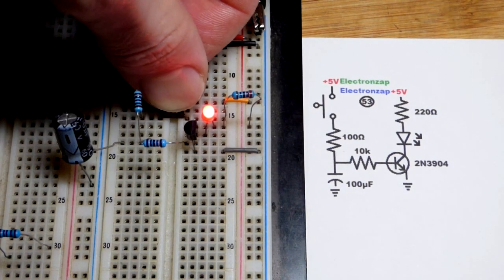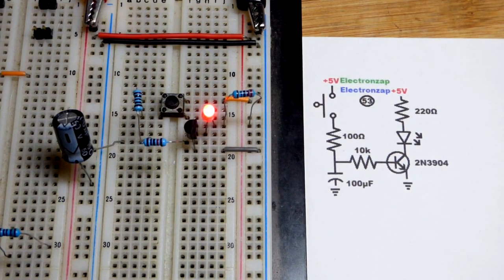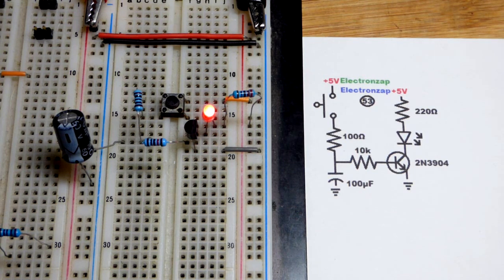So now in this video we have an NPN bipolar junction transistor wired so that we can give a quick press of the button and the LED will be on for a while and then it will fade off.